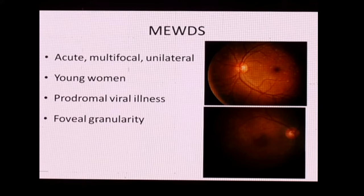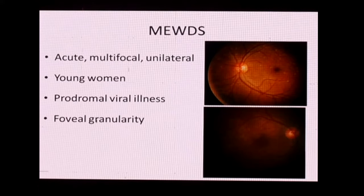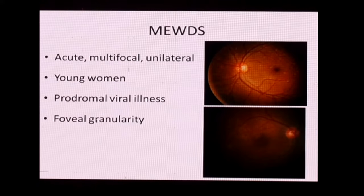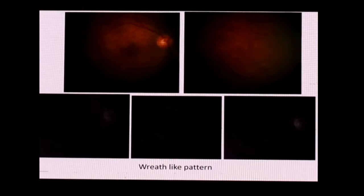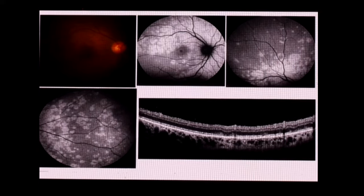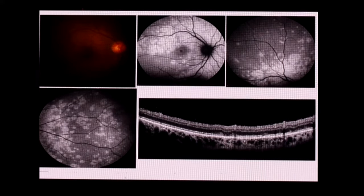MUTES is an acute multifocal unilateral disease occurring in young women with a prodrome of viral illness. An important clinical variant is foveal granularity, with very tiny dots or placoid-like lesions similar to APMPPE. FFA shows a wreath-like pattern of hyperfluorescence. Autofluorescence reveals more lesions than clinically visible. OCT shows hyperreflective material on the RPE, breaks in the interdigitation zone, ellipsoid zone, and external limiting membrane.